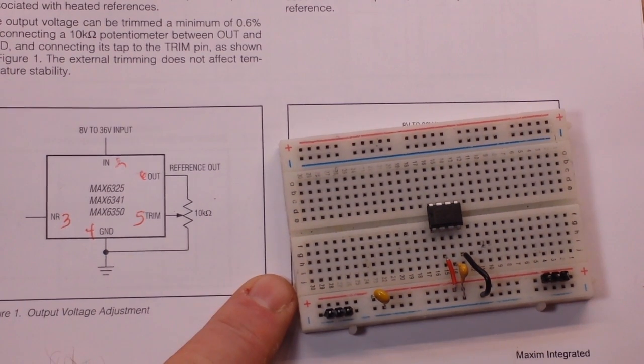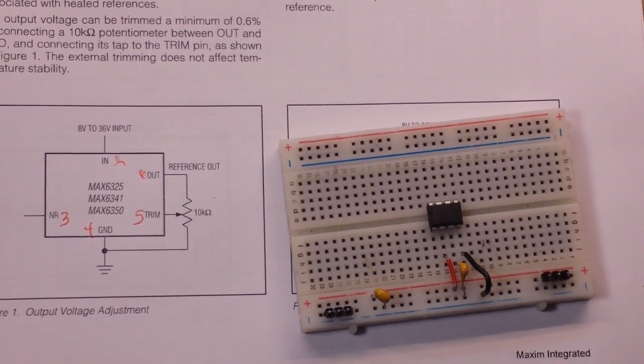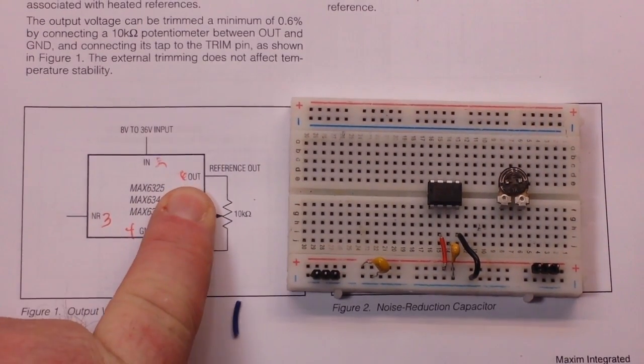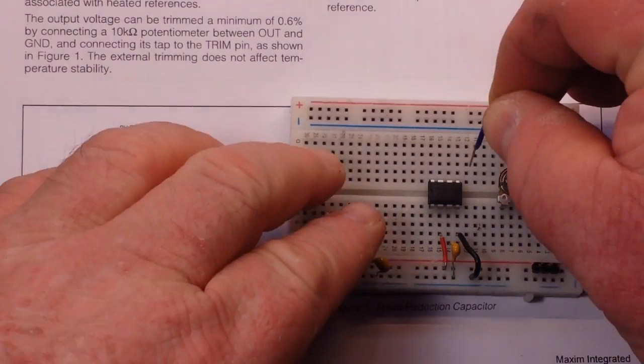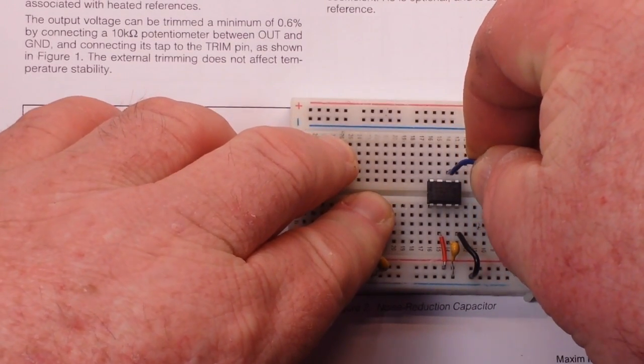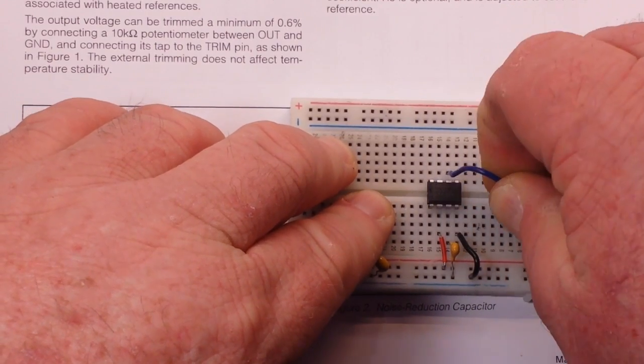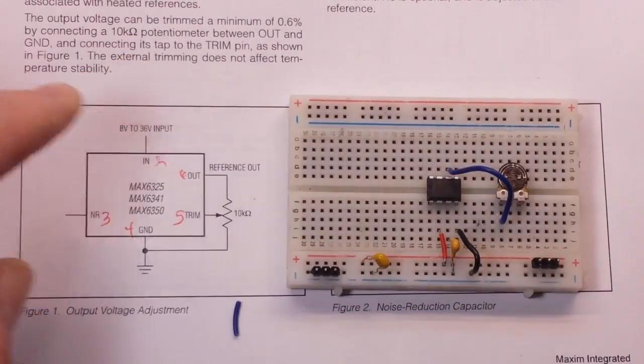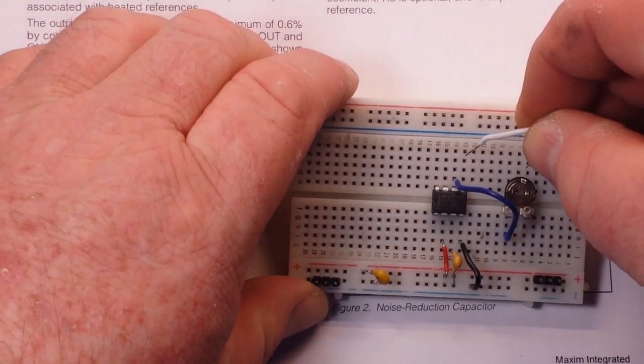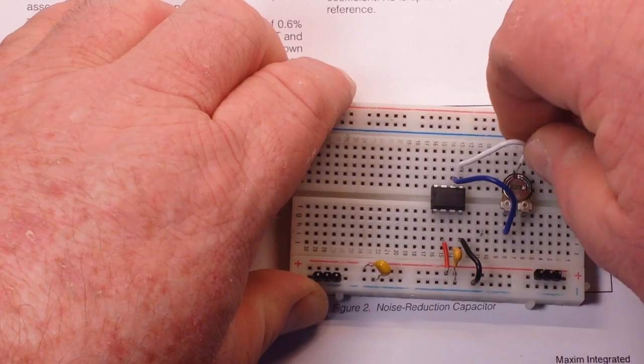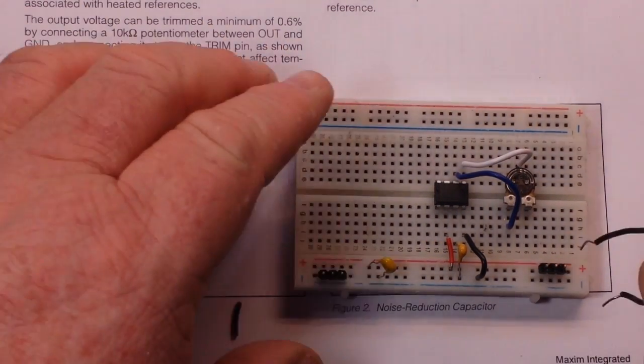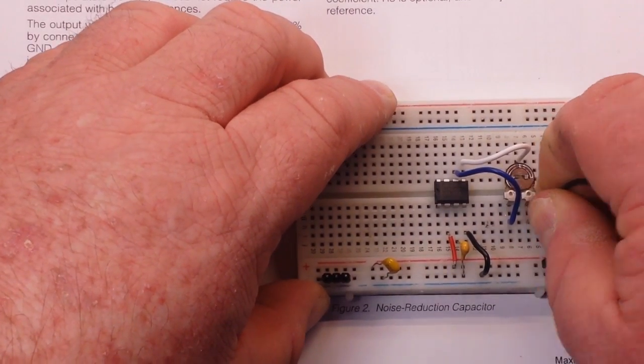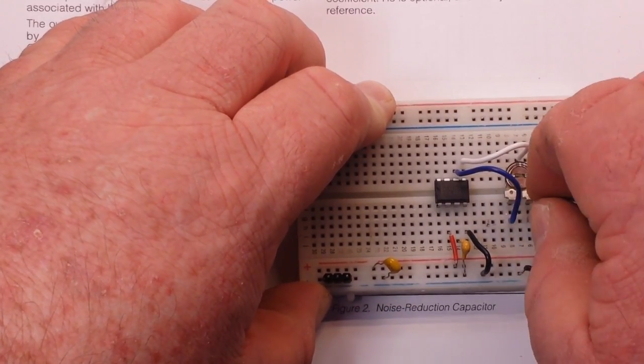And then we're going to need a 10k pot from reference out, trim to ground. Okay, we can definitely do that. Okay, so from our reference out we need to go to one side of our 10k potentiometer. Damn it boy, getting all... there we go. And then our trim goes to the wiper like that, and then we just need to run aground. Run aground.